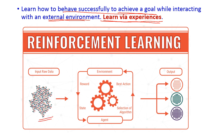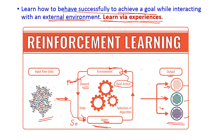Here is a simple diagram explaining reinforcement learning. The input is raw data with three different objects, and the output is three different containers with all objects placed correctly. The agent starts at initial state S₀ and selects an algorithm to choose the best action to execute on the environment. If the action is correct, the object is placed in the correct container and we get a reward; otherwise it goes in the wrong container and we get a penalty. This process is repeated until all objects are placed in the correct container.